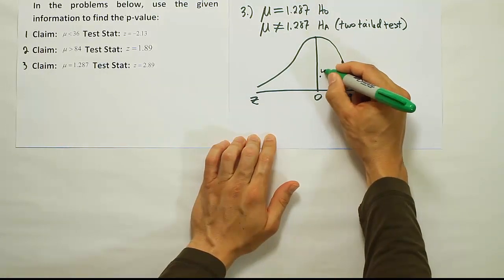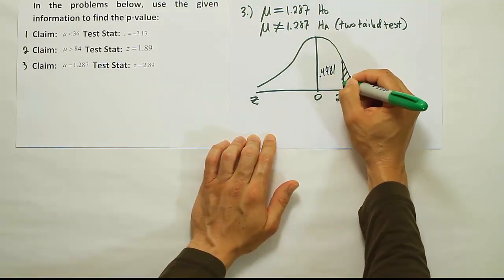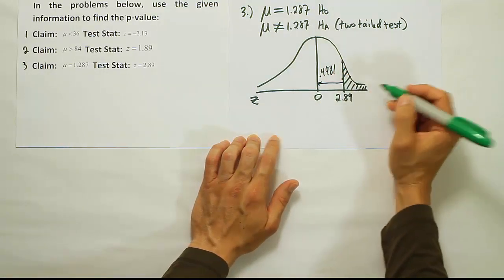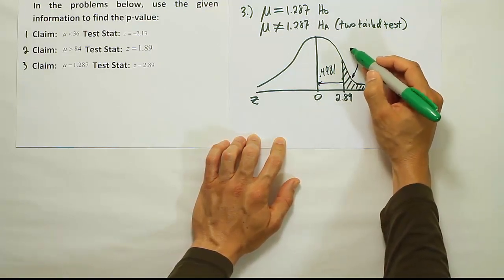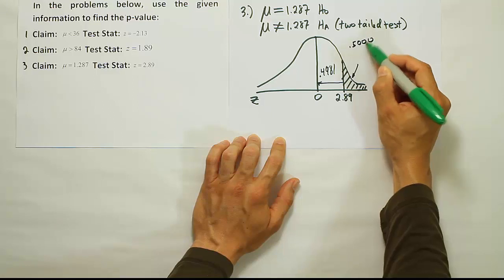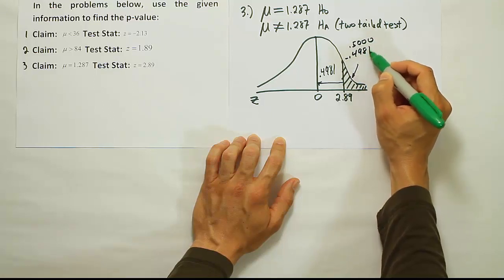Okay, so we found our area to be 0.4981. That's the area from here to here on our curve. That's not the area we want, however. We need to get this area, so we're going to do 0.5 minus 0.4981.